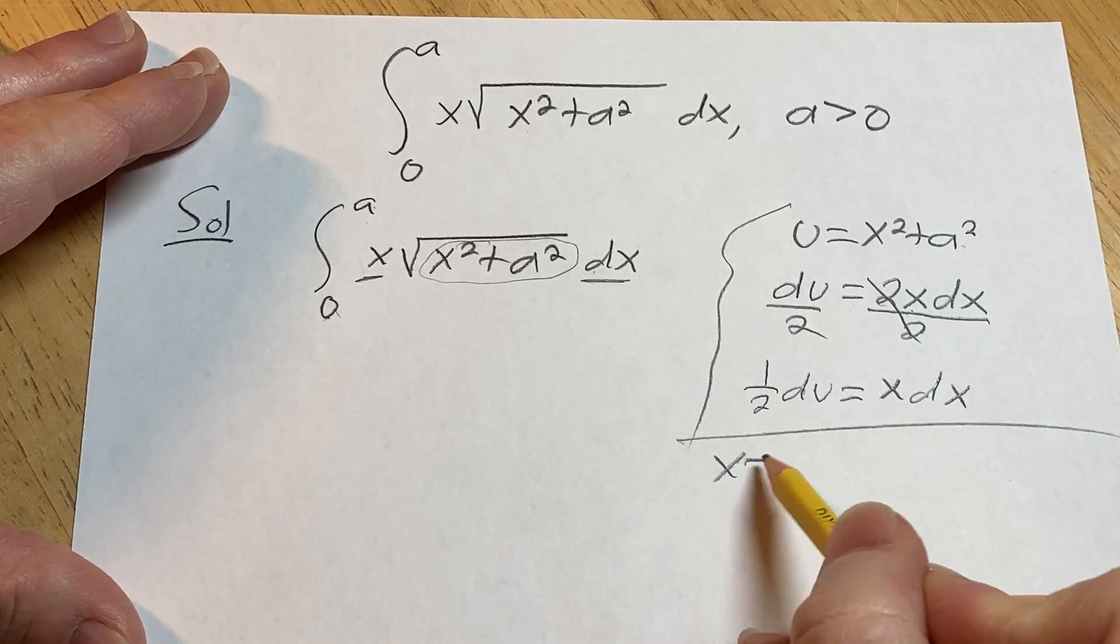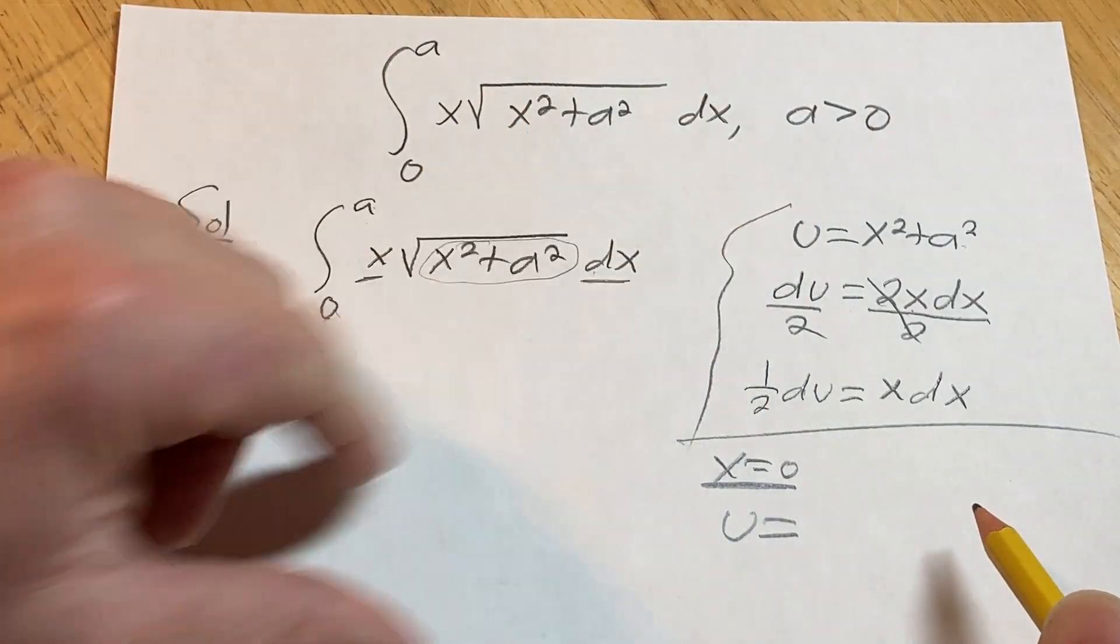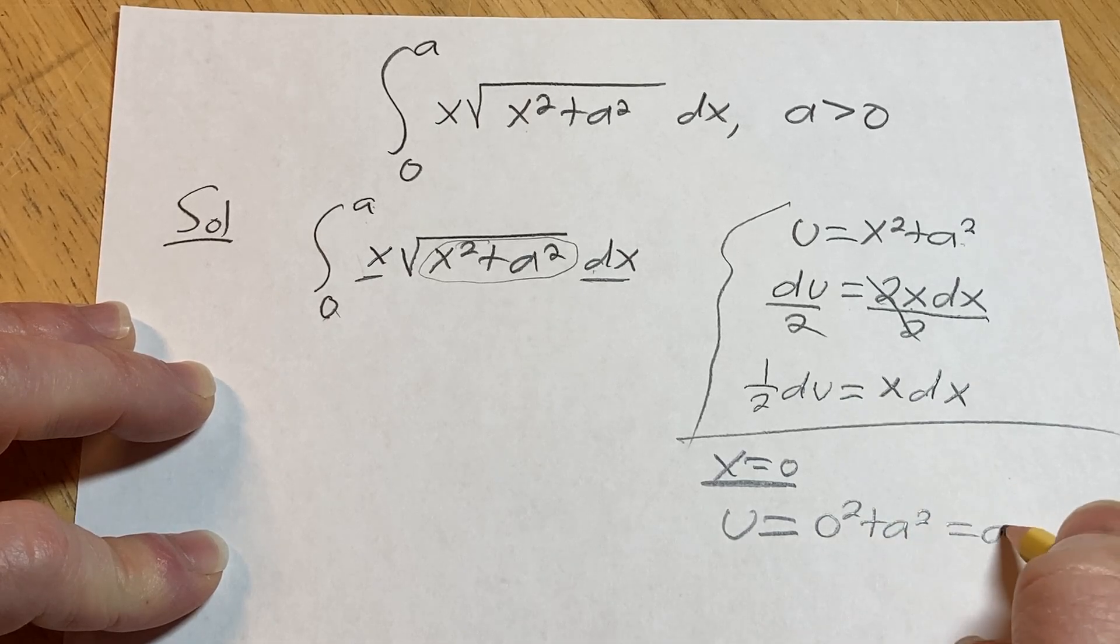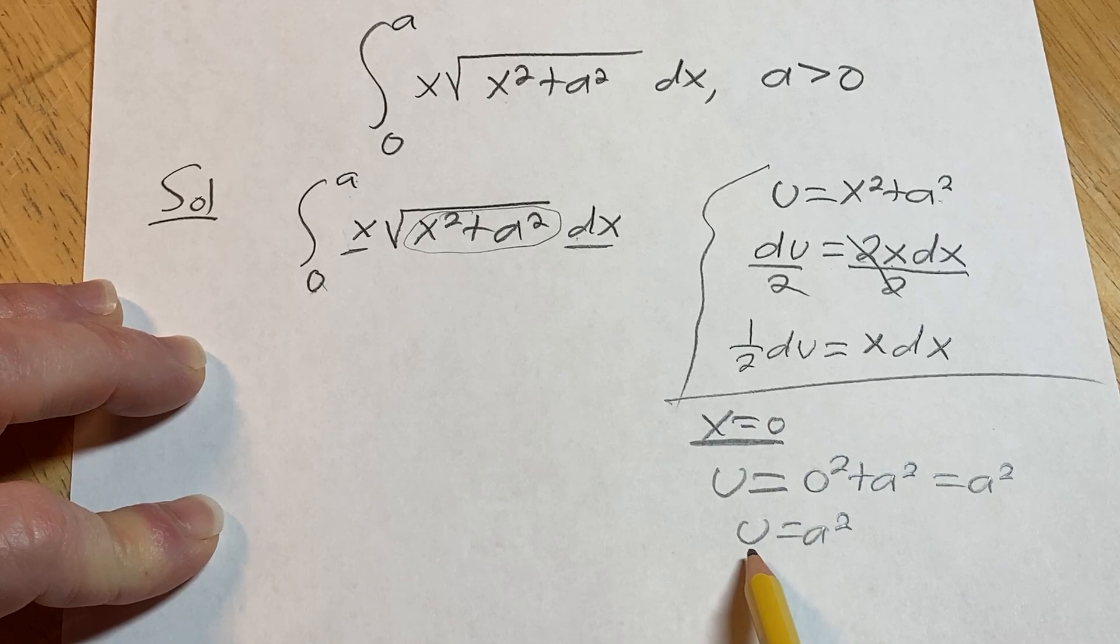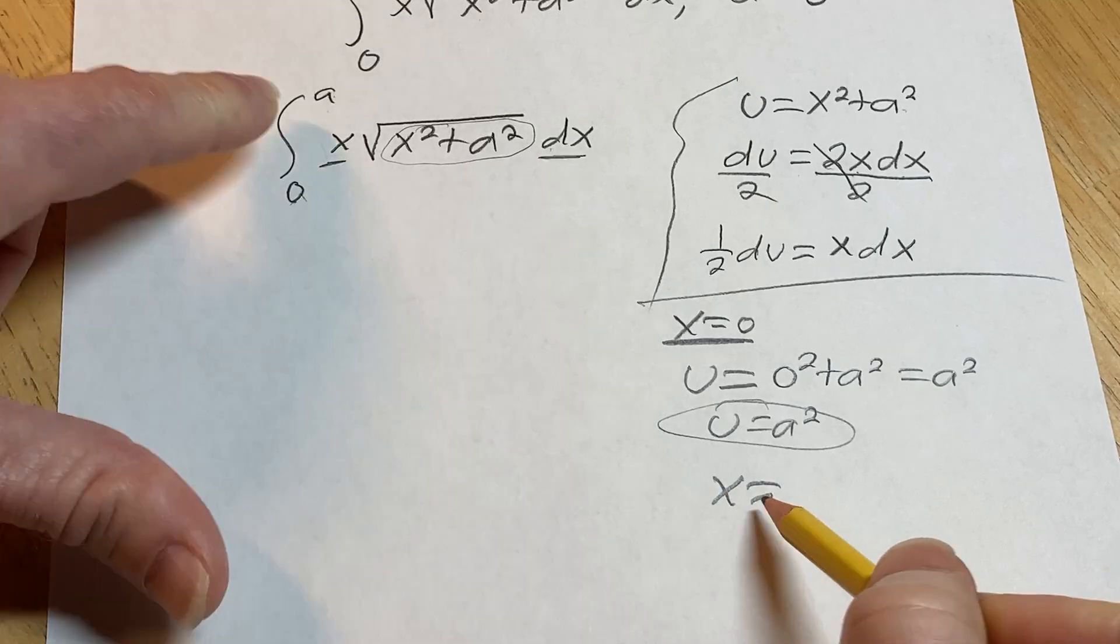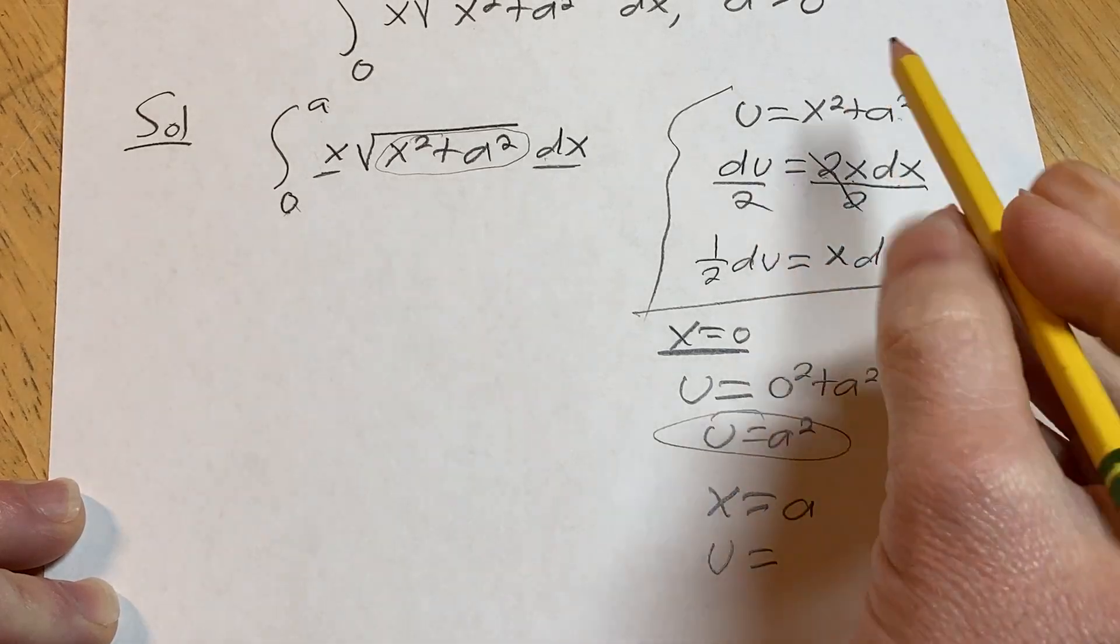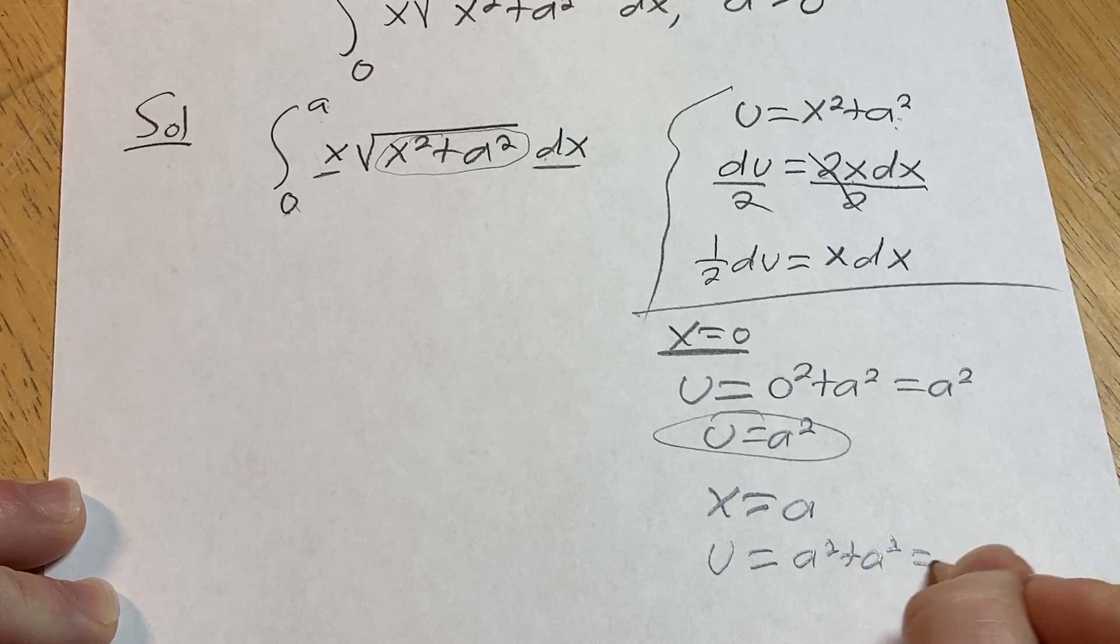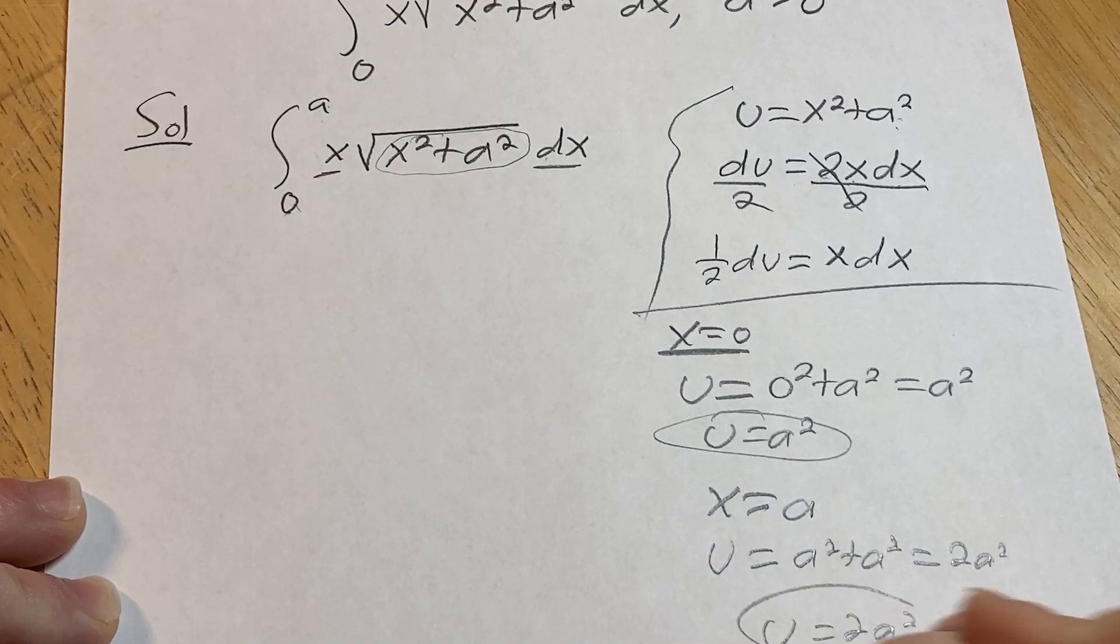So when x is 0, what is u? Well, u is defined by this equation here, right? So it'll be 0 squared plus a squared. So a squared. So u is a squared. So when x is 0, u is a squared. I'm going to circle that.